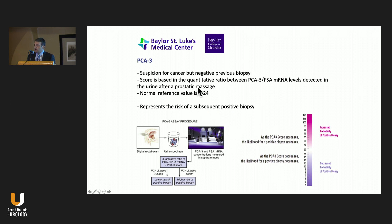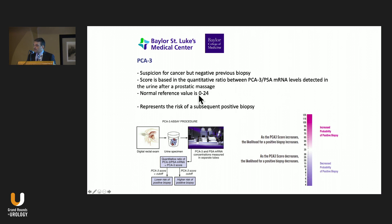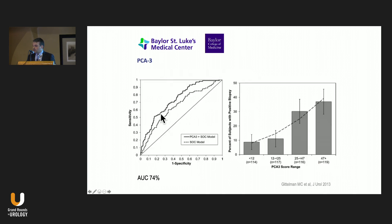PCA3 is done in the urine. It's indicated for patients with a negative biopsy but still persistent suspicion for cancer. The score is based on a quantified ratio between the PCA3 and the PSA mRNA levels detected in the urine. The normal value is 25, but if you drop the cutoff to 21 or 18, you can get even more specific results. ROC curves show how PCA3 outperforms other models, and the chart shows the risk of having positive biopsies according to the scoring.